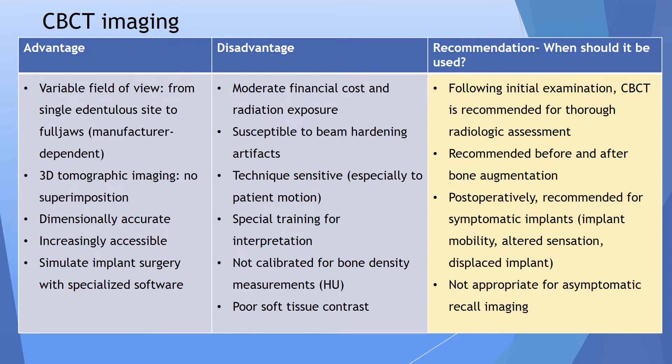The disadvantages of CBCT include moderate financial cost and radiation exposure, susceptibility to beam hardening and artifacts especially if the patient has multiple metallic restorations, and it is technique sensitive — the patient needs to be stable and still without any movement. Special training is required for interpretation. Additionally, CBCT is not calibrated for bone density measurements, meaning Hounsfield units cannot really be measured unlike a CT scan, and there is poor soft tissue contrast.